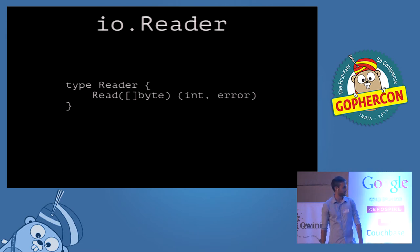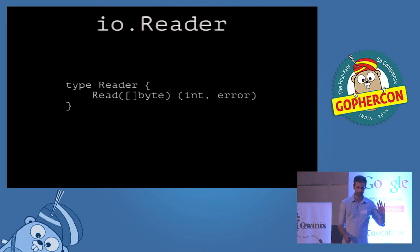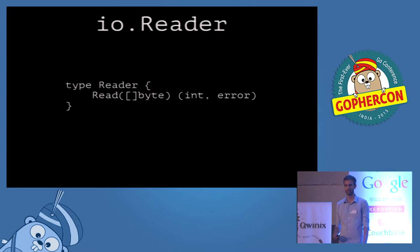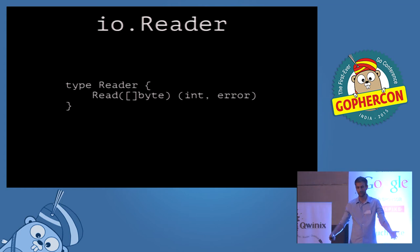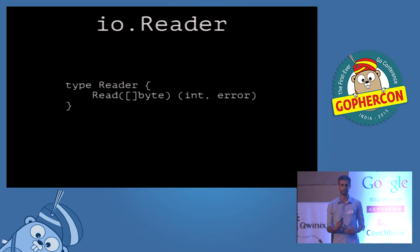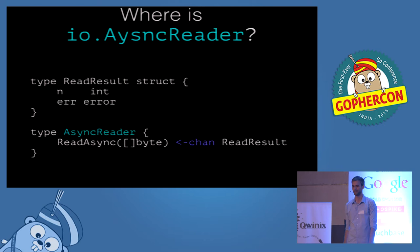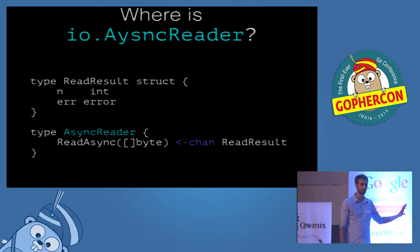Take a look at IOReader — it's a very standard API. This is how you read from a stream. It's a synchronous API: I ask a reader to read and it will block until those bytes are available and then hand them back to me. So where is the async IOReader? Where is this function in the standard library? Why does it not exist?